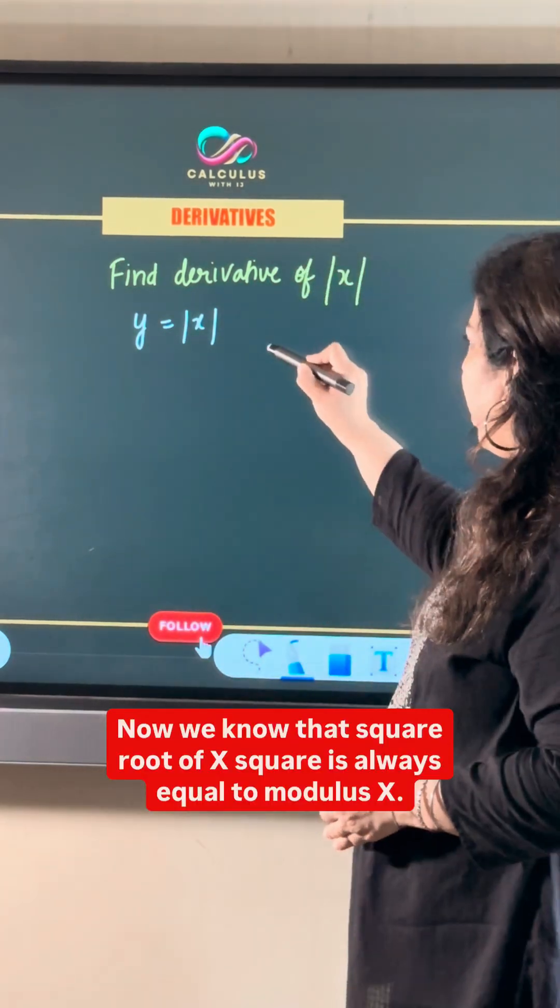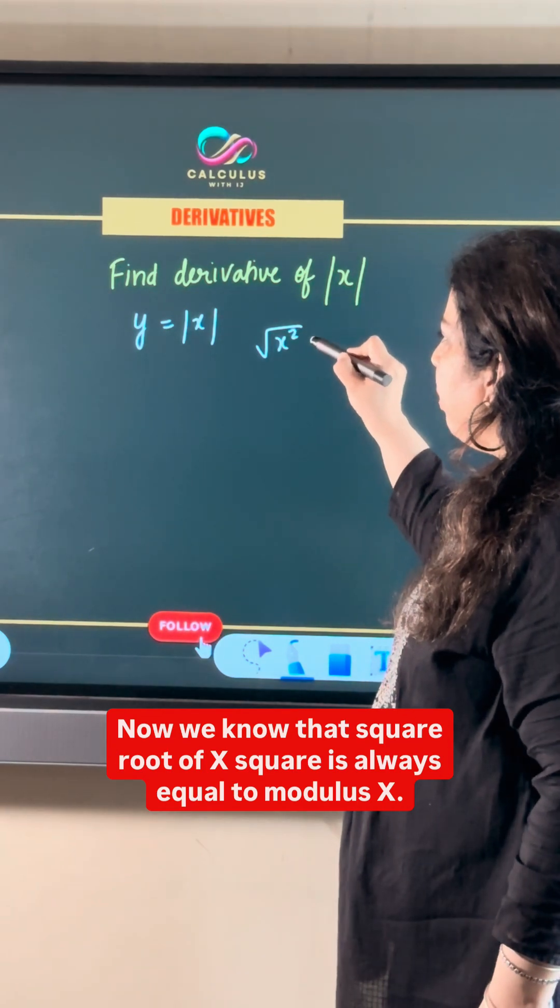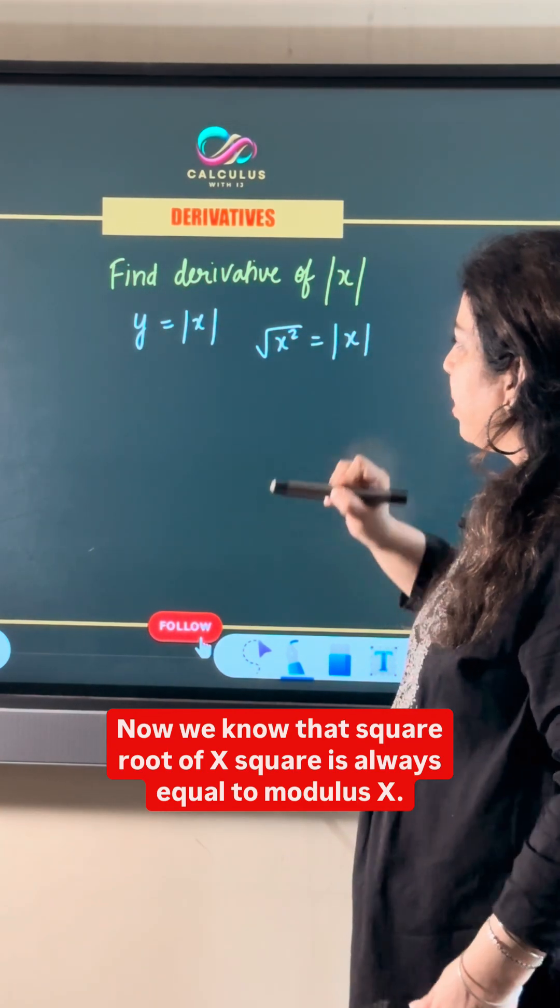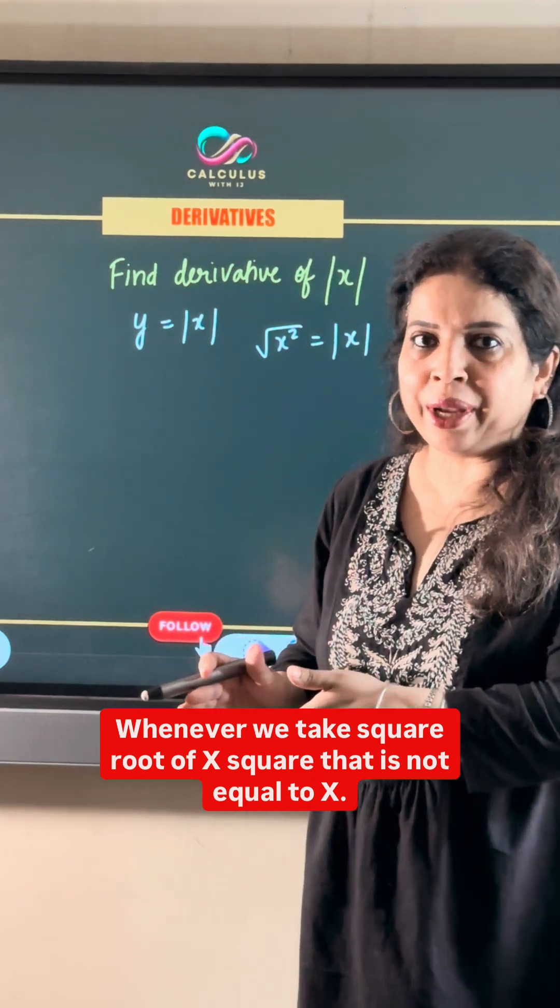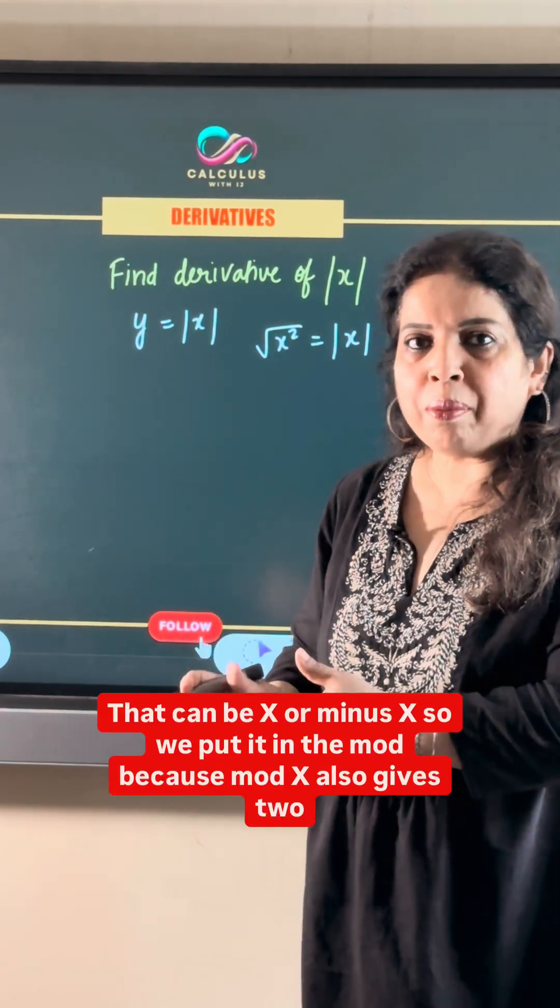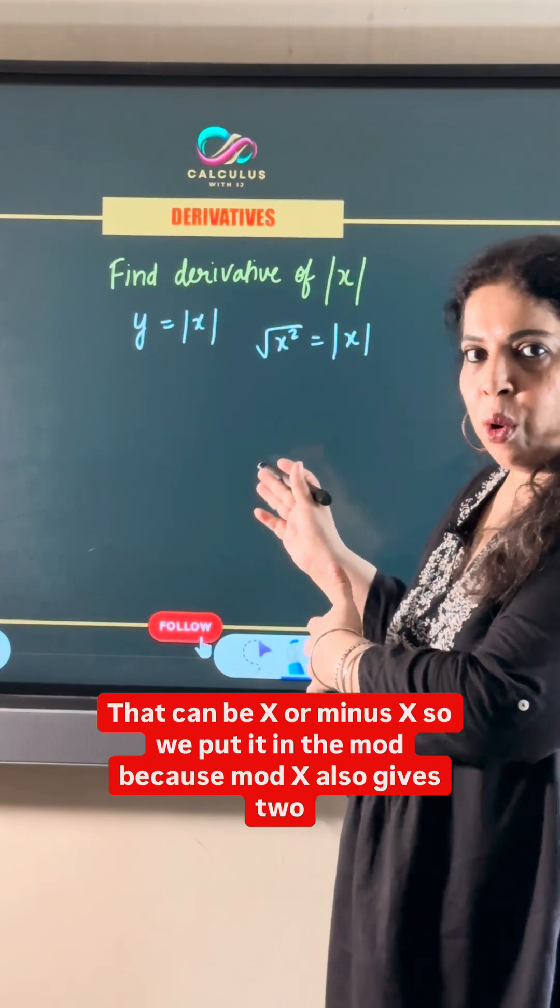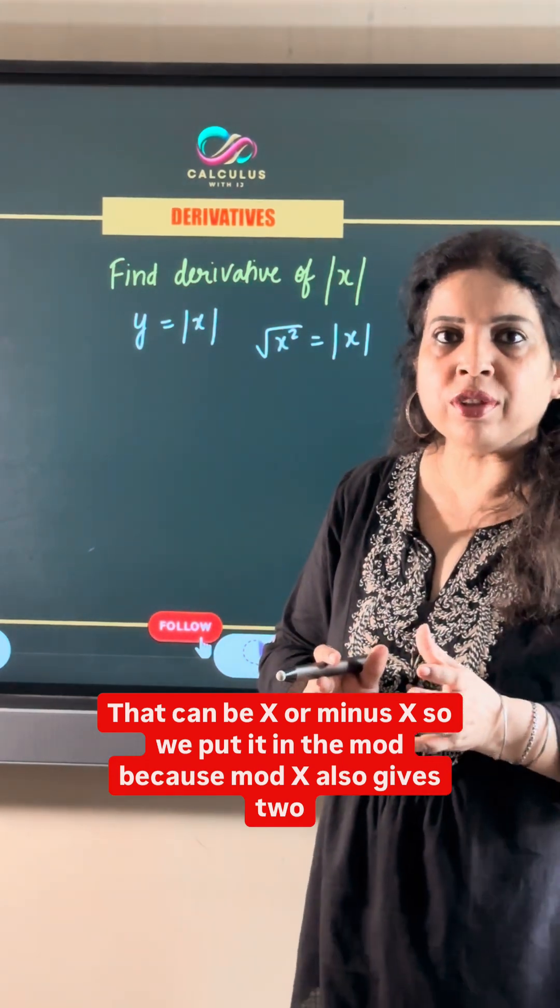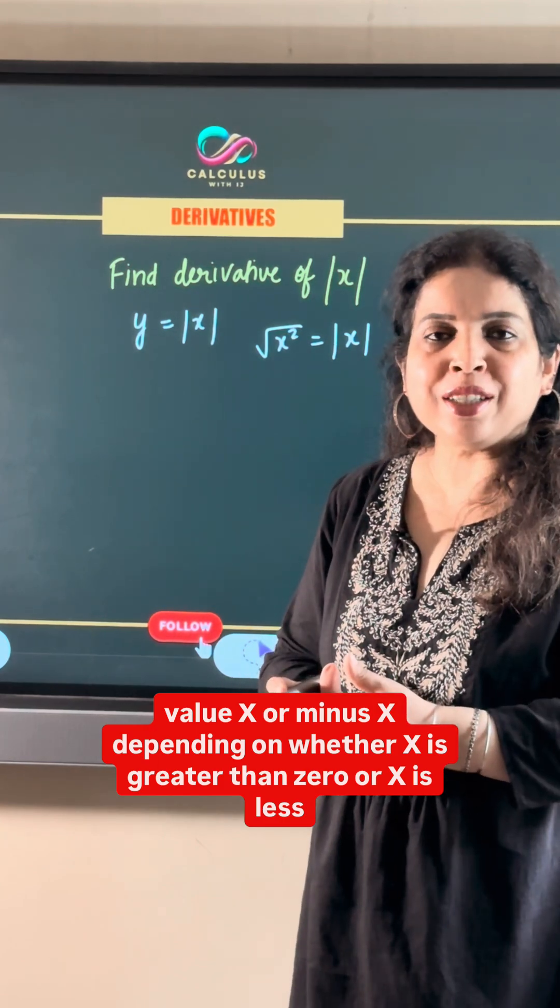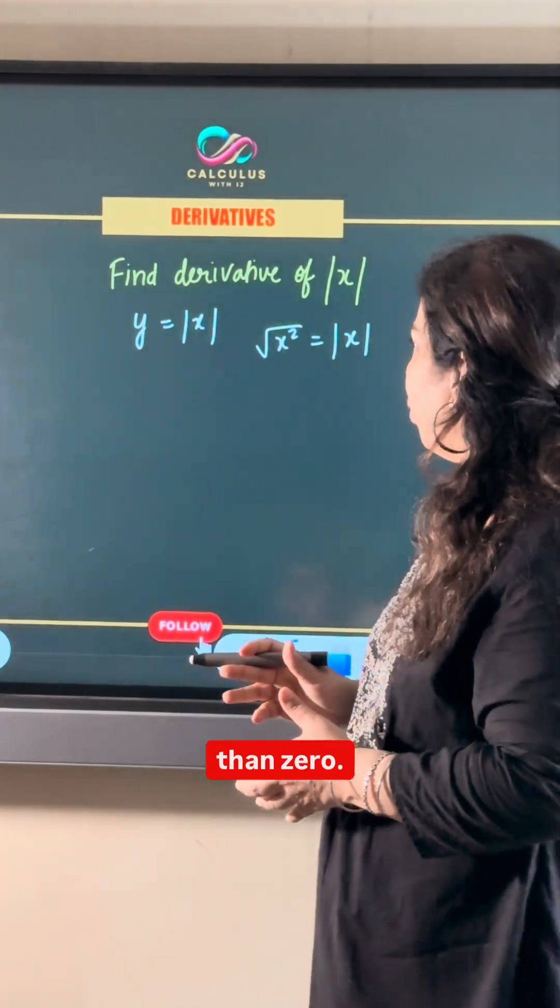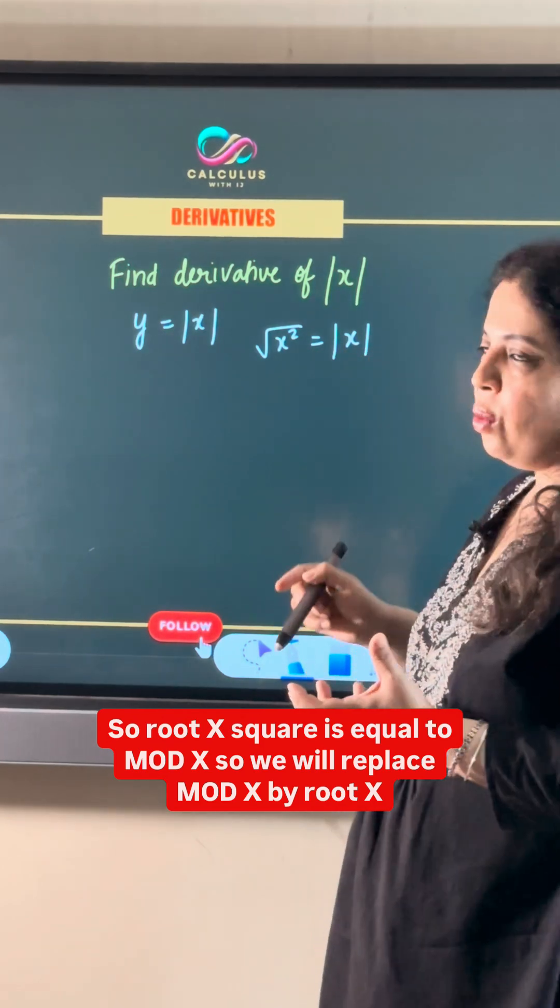Now we know that square root of x square is always equal to modulus x. Whenever we take square root of x square, that is not equal to x. That can be x or minus x. So we put it in the mod because mod x also gives two values x or minus x depending on whether x is greater than 0 or x is less than 0. So root x square is equal to mod x.